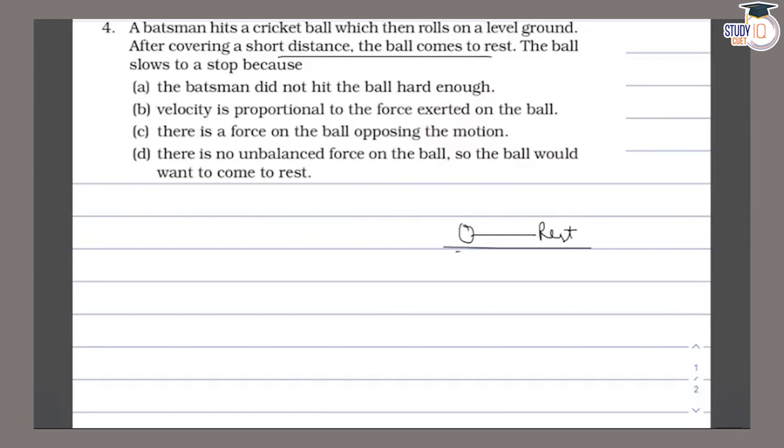The batsman did not hit the ball hard enough. The velocity is proportional to the force exerted on the ball. There is a force on the ball opposing the motion, or there is no unbalanced force on the ball, so the ball would come to rest.